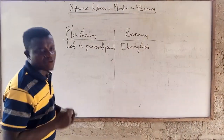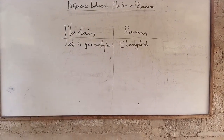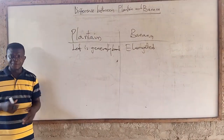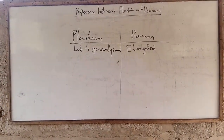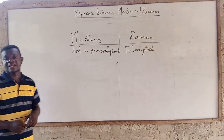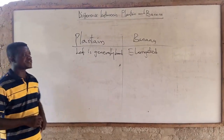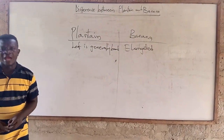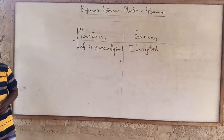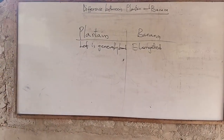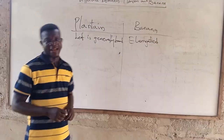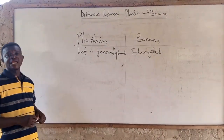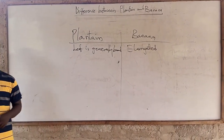Banana suckers look like a sword — quite pointed, with very strong support. It is not easy to pull a banana sucker from its parent plant, but it is quite easier to remove the sucker of plantain. Moving on to disease resistance: bananas are generally considered wild plants and are very resistant to diseases and pests. It is not easy to see Panama disease or black Sigatoka in bananas, but it is very common to see such diseases in plantain.